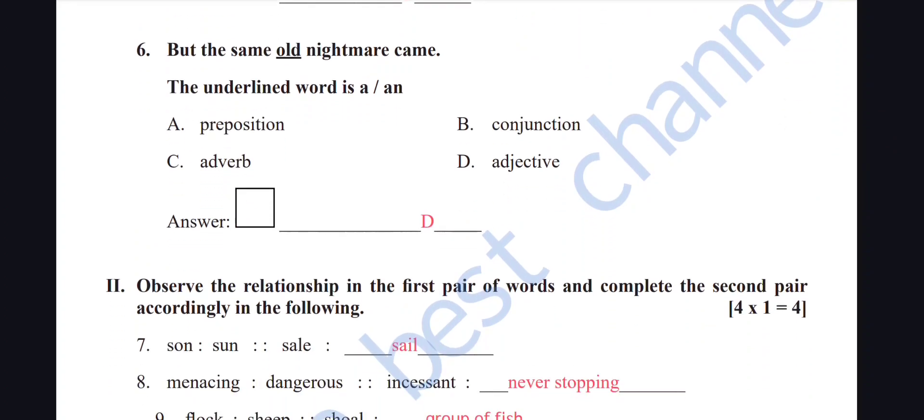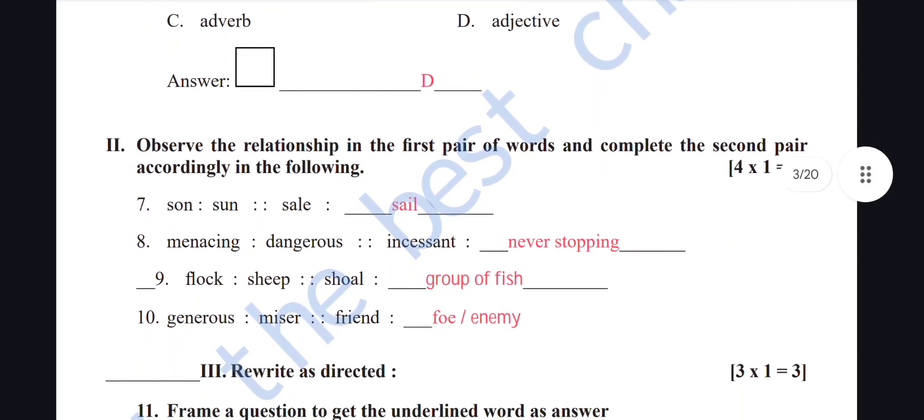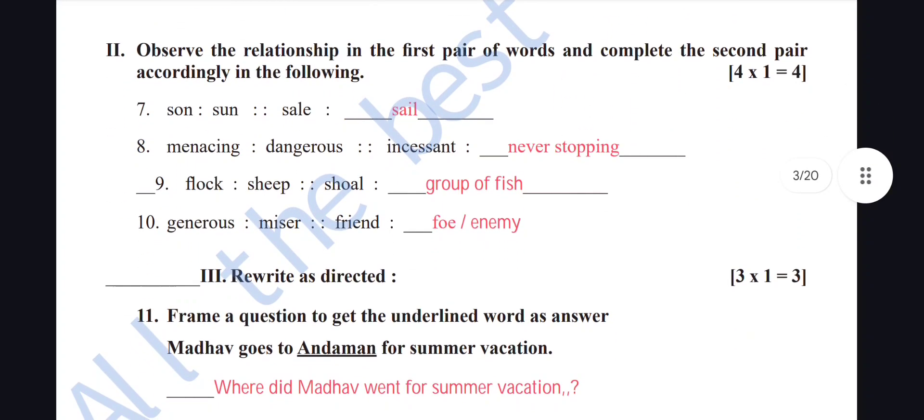'But the same old nightmare came' — the underlined word 'old' — is it a preposition, conjunction, adverb, or adjective? It describes the kind of nightmare, so it is an adjective. Option D is the right answer.